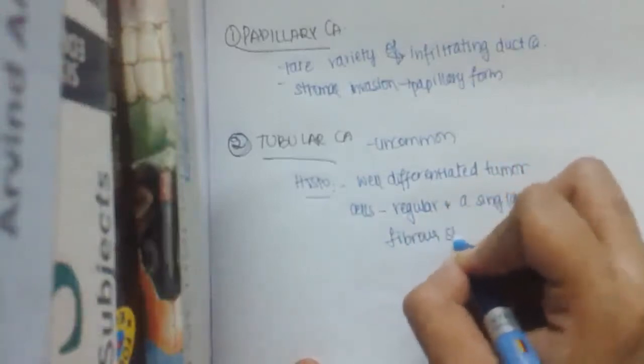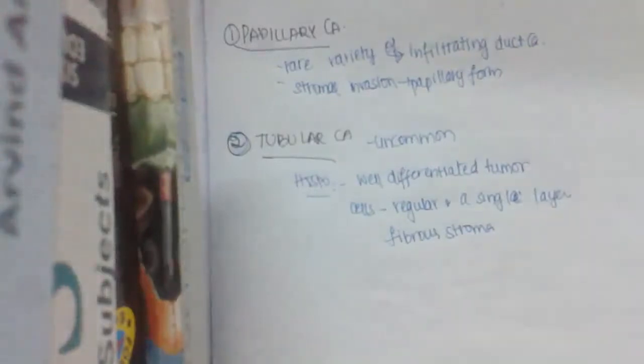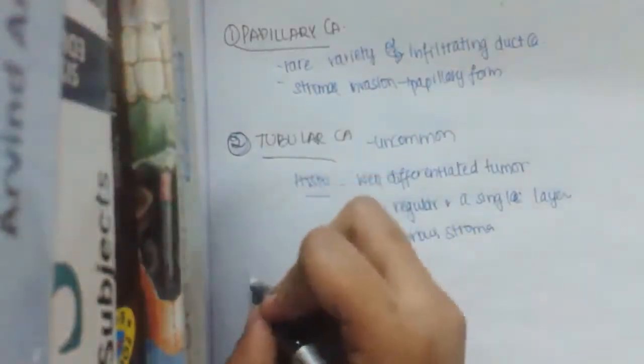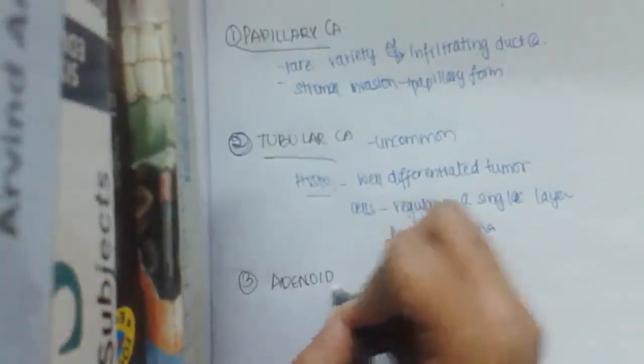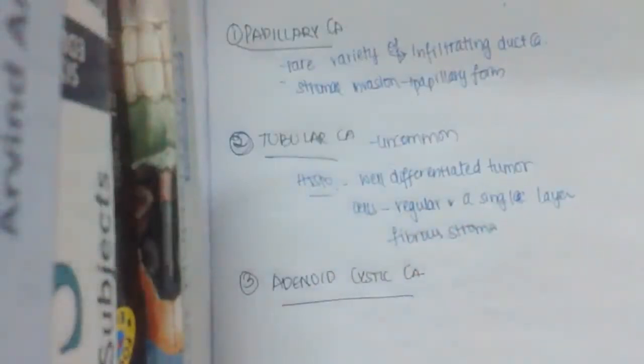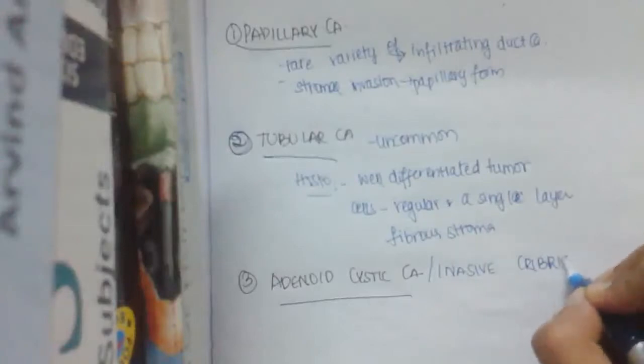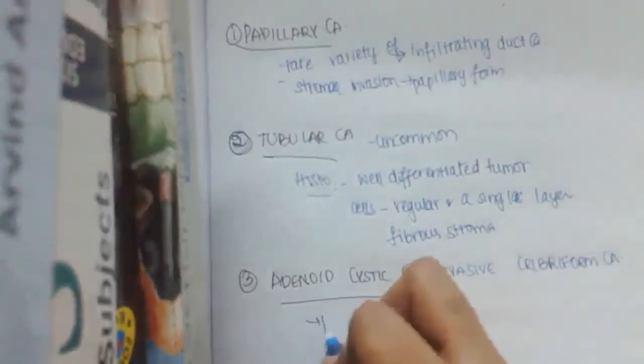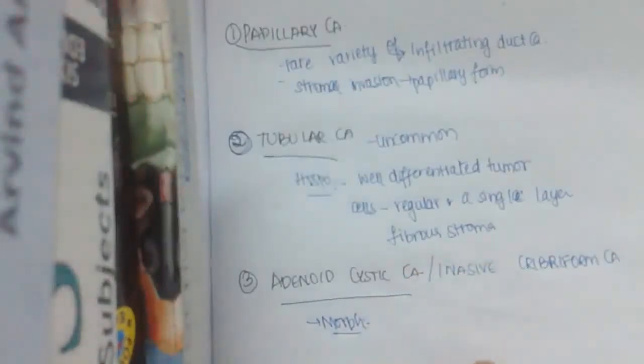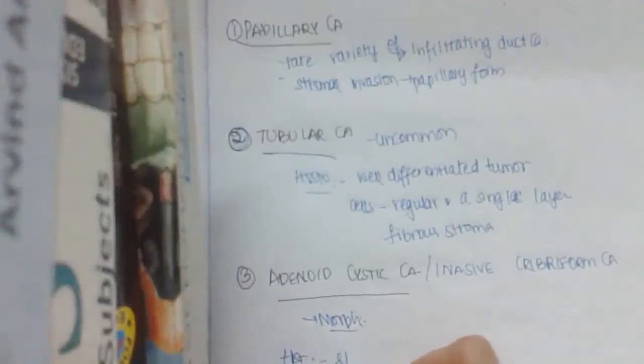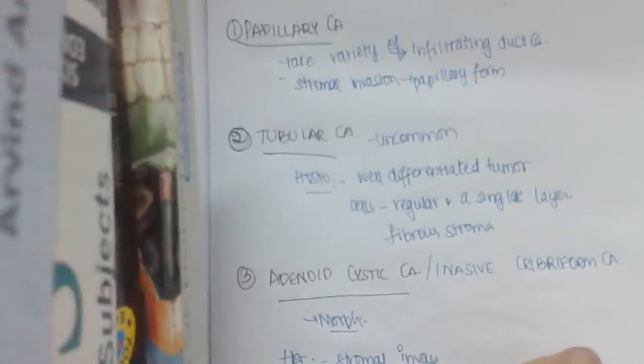The third one is adenoid cystic carcinoma. Adenoid cystic carcinoma is also called invasive cribriform carcinoma. Here, morphologically, histology shows stromal invasion of cells with fenestration, as I have already drawn in cribriform carcinoma in infiltrating tubular type.